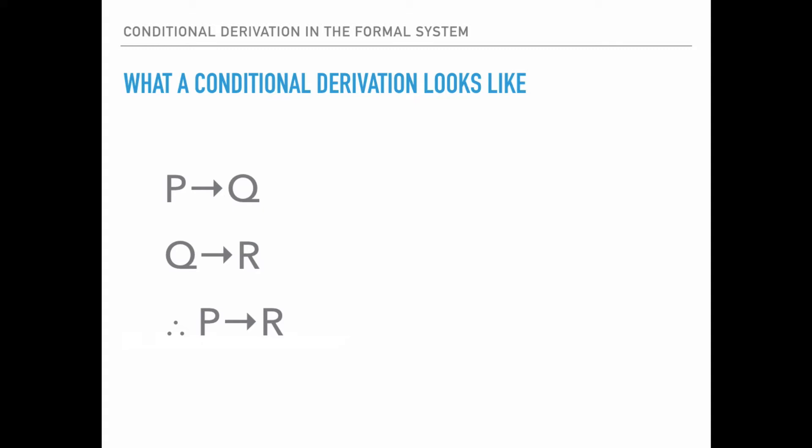Here's an argument in symbols. This is: if P then Q; if Q then R; therefore, if P then R. This has the same form as the argument we looked at in English, and it has the same problem — if you look at just the premises, you don't have what you need to do modus ponens.